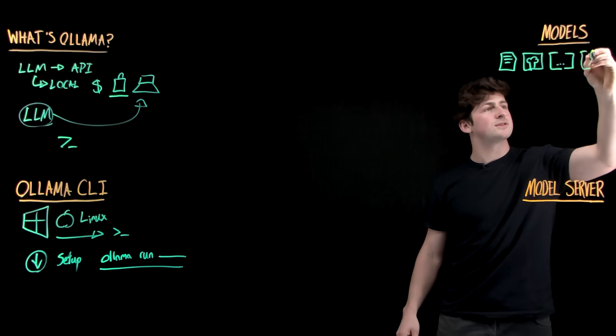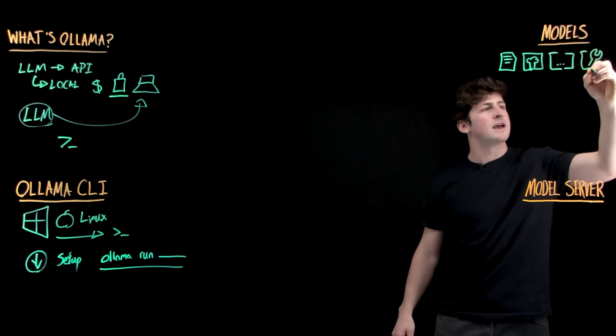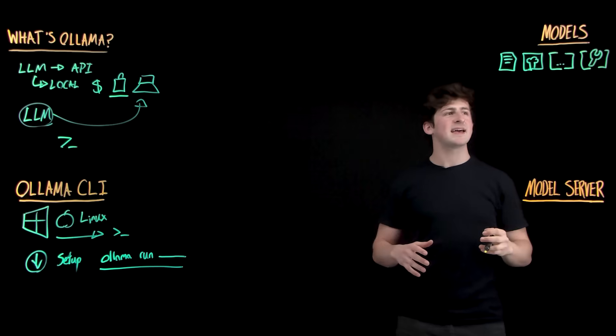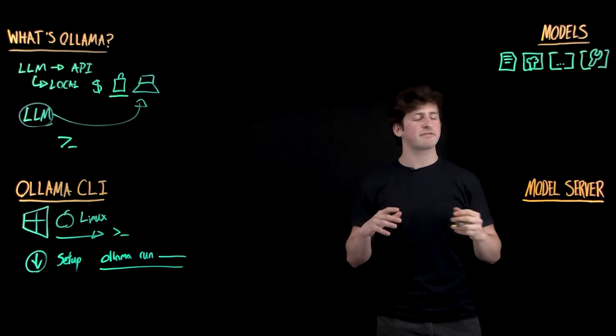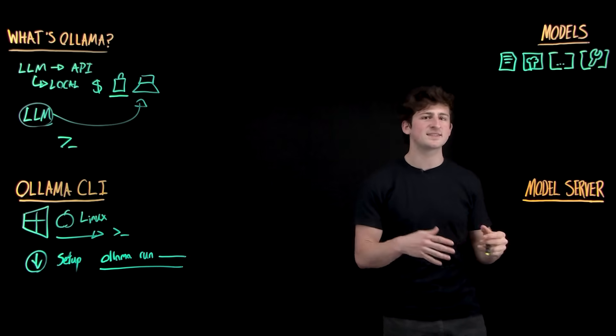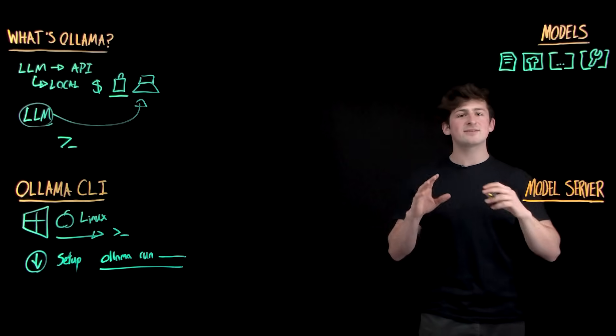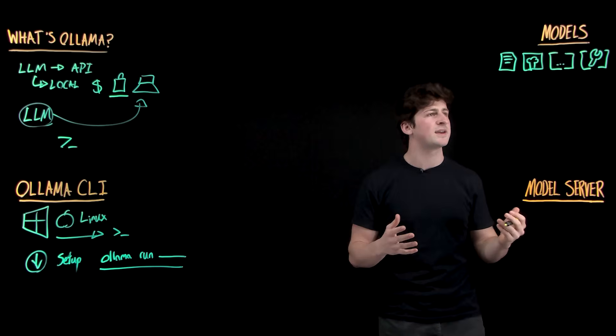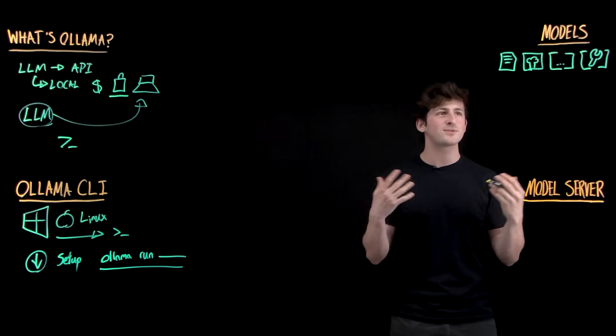And then finally, the last type of model that you can use is tool-calling. It's a fine-tuned version of a language model that is familiar with calling different functions, APIs, and services in an agentic way. These are some of the types of models, but how would you pick the right model for your use case?